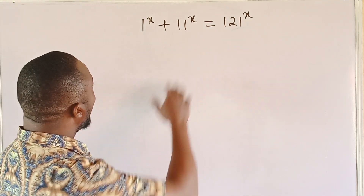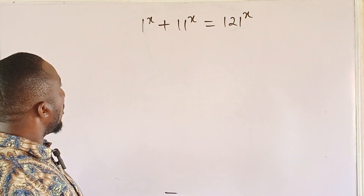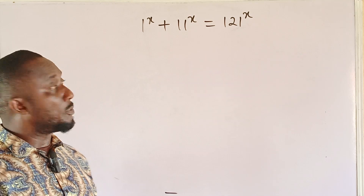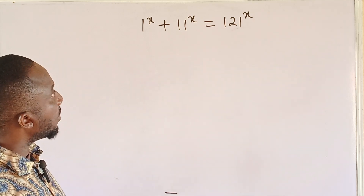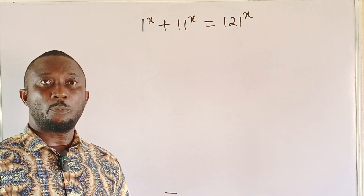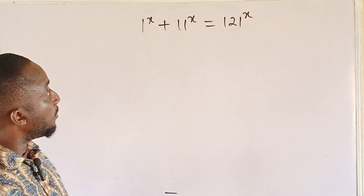Let's quickly take a look at this problem. We have 1^x + 11^x = 121^x. I shall present two methods in solving this problem.